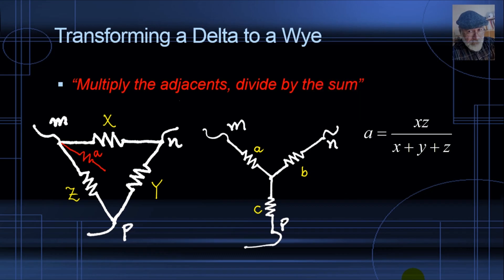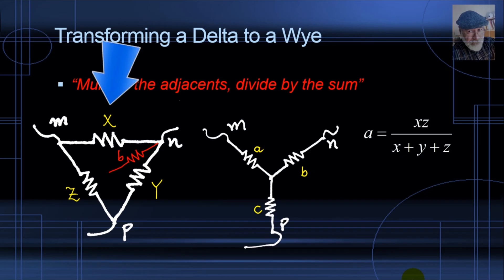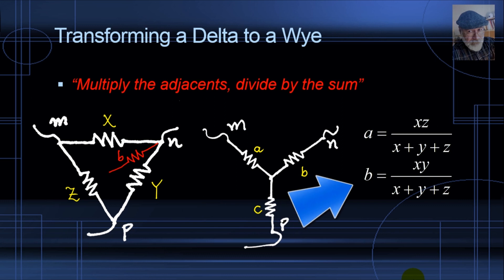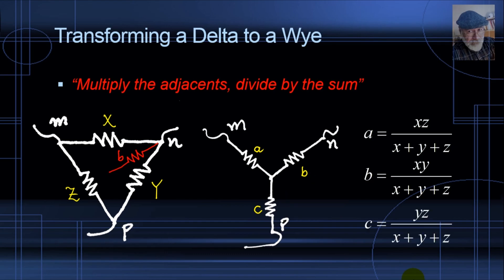How about the value of resistor B? Same thing — multiply the adjacents to B and divide by the sum. We superimpose the resistor C onto the triangle, and the adjacents to B are X and Y. Multiply them and divide by the sum: B equals X times Y divided by X plus Y plus Z. And of course, the value of C is Y times Z divided by the sum.